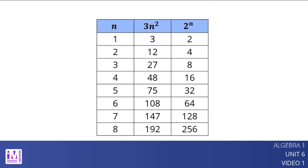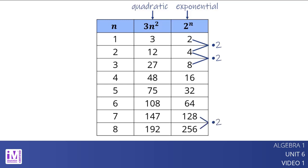Let's compare the quadratic expression 3n² and the exponential expression 2 to the n. A table of values shows that 3n² is initially greater than 2ⁿ, but 2ⁿ eventually becomes greater. When n increases by 1, the exponential expression 2ⁿ always increases by a factor of 2. For example, when n increases from 1 to 2, the factor for 3n² is 4.